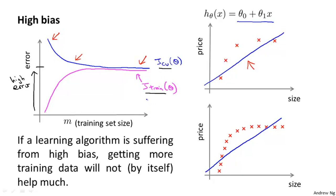This implies something very interesting: if a learning algorithm has high bias, as we get more and more training examples, the cross-validation error isn't going down much — it's basically flattened out. So if a learning algorithm is already suffering from high bias, getting more training data by itself will actually not help that much. In the figure, with five training examples we fit a certain straight line, and with a ton more training data we still ended up with roughly the same straight line. Knowing this can prevent you from wasting a lot of time collecting more training data where it might just not end up being helpful.